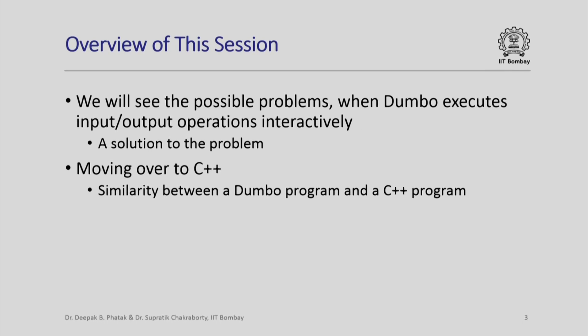In this session we will see the possible problems when Dumbo executes an input or an output operation interactively — that is when it has to collect values from us and give values to us. We will also determine a solution to this problem. In the process we will find that the program we construct for Dumbo actually looks closer and closer to an actual C++ program. Indeed we will see how conceptually the model that we have built of a computer in the form of Mr. Dumbo is actually very similar to the actual C++ programming language.